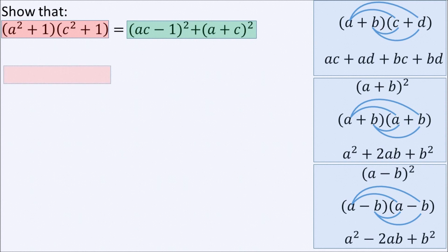We'll take one side of the equation at a time. First, we'll expand these two brackets highlighted in red, just like we did earlier. So this becomes A squared C squared plus A squared plus C squared plus 1.